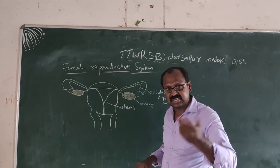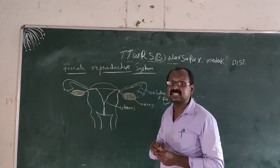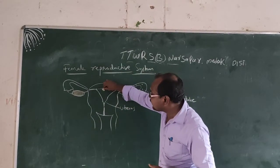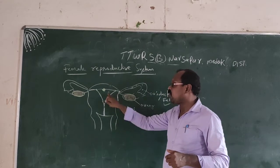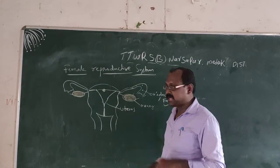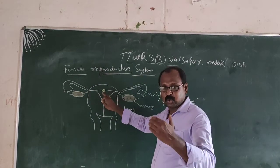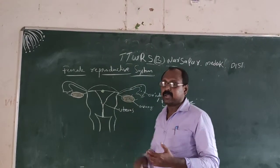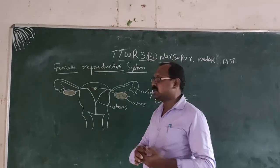After fertilization, the fertilized zygote is implanted in the wall of the uterus, where it grows into an embryo, the embryo into a fetus, and the fetus into a baby.